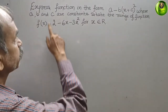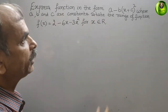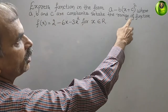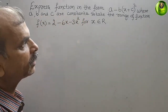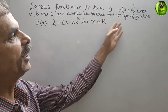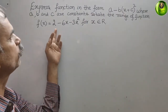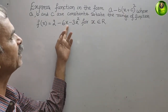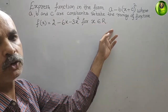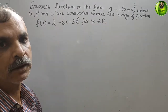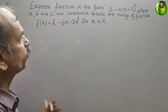The question is to express the function in the form a minus b(x plus c) whole square, where a, b and c are constants, and state the range of the function. What they have given is f(x) equal to 2 minus 6x minus 3x square, for x belonging to real numbers.